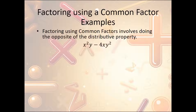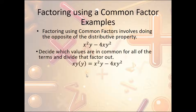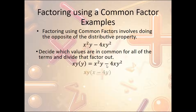Another example: x squared y minus 4xy squared. We need to figure out what's in common. We have a single x in common — because x squared here versus no squared there, so we can only pull one x out. We also have a y and a y squared, so we can pull one y out. Dividing by x and y: the first term becomes just x, and the second term becomes negative 4y. So we end up with xy times (x minus 4y).